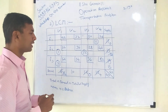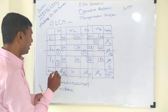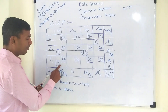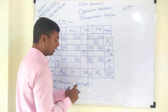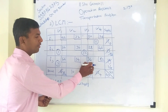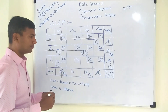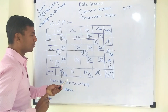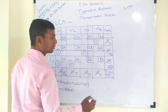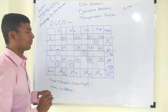Now only cells 54 and 82 remain. For the cell with cost 54, demand is 10 and supply is 14. The smallest is 10, so we allocate 10. Subtracting: 10 − 10 = 0 and 14 − 10 = 4. Warehouse 2 has fulfilled its demand, so we cancel Warehouse 2.